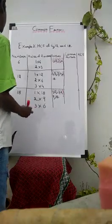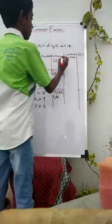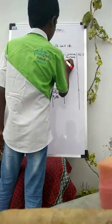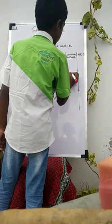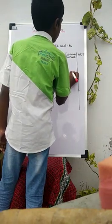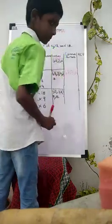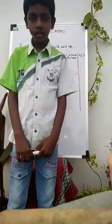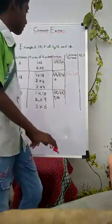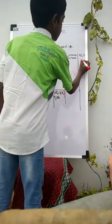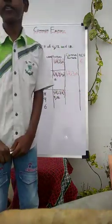The common factors of 6, 12, and 18 are 1, 2, 3, and 6. Here the largest of the common factors is 6. So the HCF is 6.